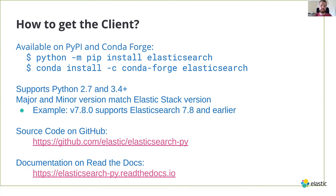We officially support Python 2.7 and 3.4 and later with the current version of the client. When you're using a specific version of Elasticsearch, there is such a thing called the Elastic Stack, and that has a version associated with it. If you're using Elasticsearch 7.8, you can use anything that is 7.8 or later for the client. If my cluster is 7.5, it will work with any version of 7.5 or later of the client. Source code is available on GitHub under Apache 2 license, and docs are on Read the Docs.